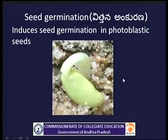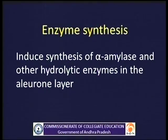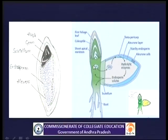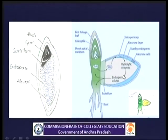Seed germination: Gibberellins induce seed germination in photoblastic seeds, which are sensitive to light. Enzyme synthesis occurs in the seeds when gibberellins are used. The seeds contain an aleurone layer, which is a protein layer. From this aleurone layer, gibberellins initiate the production of the enzyme alpha-amylase and some other hydrolytic enzymes. These enzymes enter the endosperm, which contains starch. This starch is converted into energy and with that energy the embryo grows.